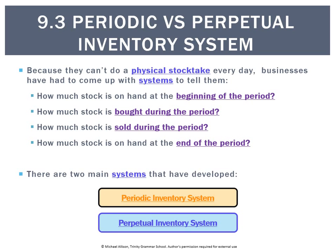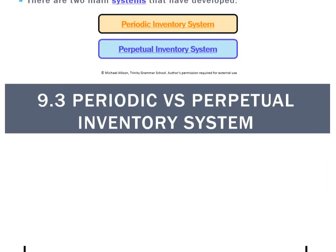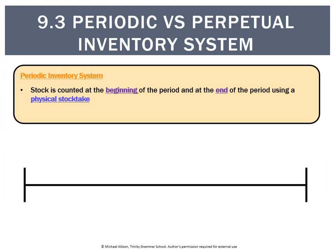We don't actually need to assess you on the periodic system, just the perpetual, but we're going to learn about the periodic to have a basis of comparison. The periodic system works like this: you count stock with a stock take at the beginning of the period and at the end, and the difference must be how much stock was sold during the period.